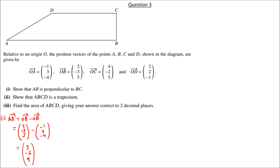Vector BC = OC − OB = (4, −2, 5) − (2, −3, 5) = (2, 1, 0). To show perpendicularity, we check the dot product AB · BC = (3)(2) + (−6)(1) + (9)(0) = 6 − 6 + 0 = 0.